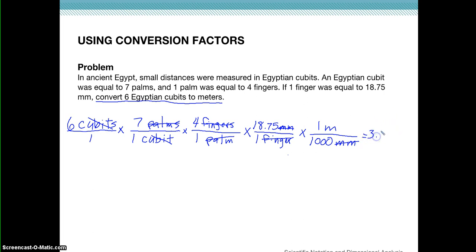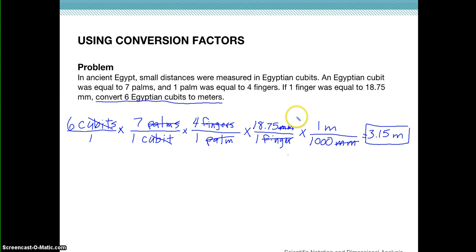The answer is 3.15 meters. In dimensional analysis, you want all the units to cancel except for the unit you want your answer in — in this case, meters. We're going to be doing dimensional analysis from now on, the rest of this year and all next year in physics, so it will get easier the more you do it. Make sure you bring your notes to class — we'll be practicing dimensional analysis, metric conversions, sig fig rules, and talking about measurements in chemistry. Have your calculator in class as well.